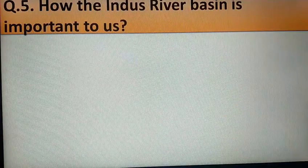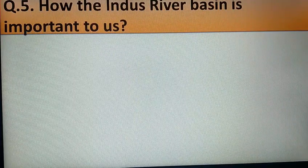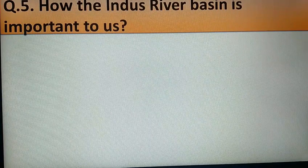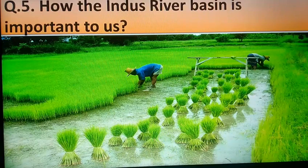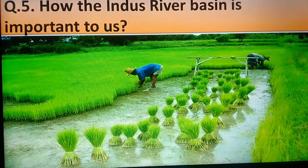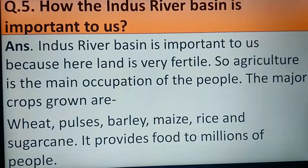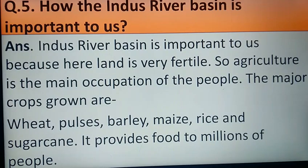The fifth question is: how is the Indus River Basin important to us? River Indus and its tributaries make the western part of the northern plains very fertile, so agriculture is the main occupation in this region. The Indus River Basin is important to us because the land is very fertile and agriculture is the main occupation of the people. The major crops grown are wheat, pulses, barley, maize, rice, and sugarcane. It provides food to millions of people.